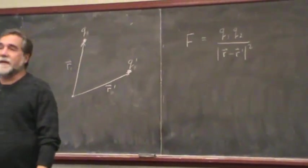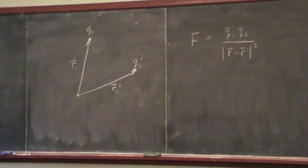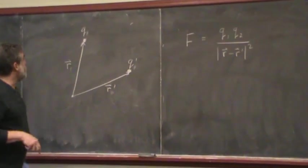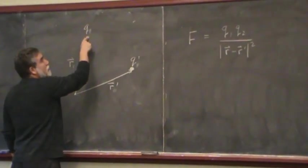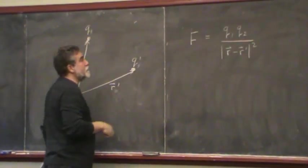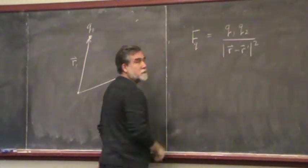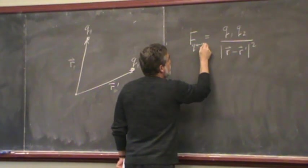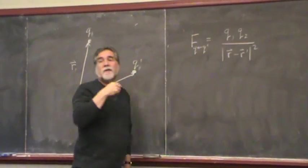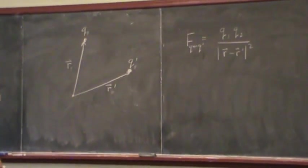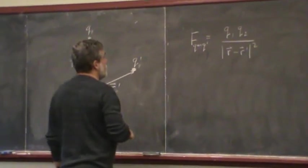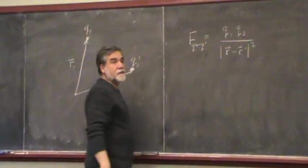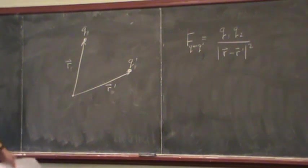I haven't got the direction straight yet. So I need the direction that points between these two. The rule will be that if I want to calculate the force on this particle — the force on charge q due to q prime — I can never keep straight which one of those two comes first in the subscript, so I'm going to write it this way. The force on q due to q prime is — now I need the direction.